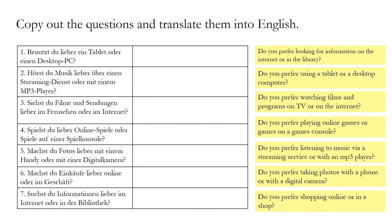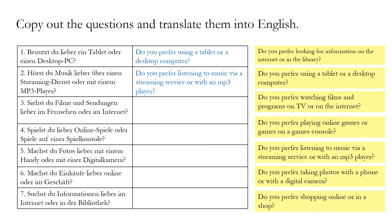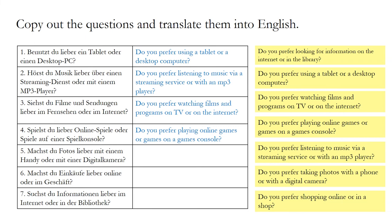On page 83 we find seven questions. I'd like you to copy them out and translate them into English. Pause the video now. 1. Do you prefer using a tablet or a desktop computer? 2. Do you prefer listening to music via a streaming service or with an MP3 player? 3. Do you prefer watching films on TV or on the internet? 4. Do you prefer playing online games or games on a games console? 5. Do you prefer taking photos with a phone or a digital camera? 6. Do you prefer shopping online or in a shop? 7. Do you prefer looking for information on the internet or in the library?